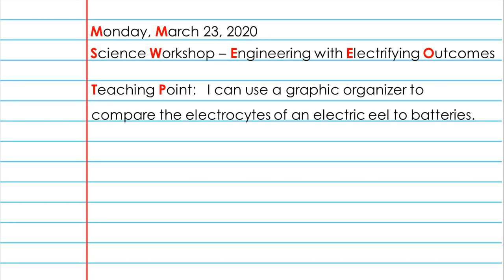Today is Monday, March 23, 2020. We're going to be talking about Engineering with Electrifying Outcomes — that's our lesson name for today. Our teaching point is: I can use a graphic organizer to compare the electrical size of an electric eel to batteries.